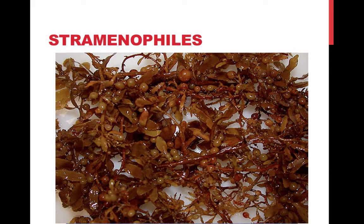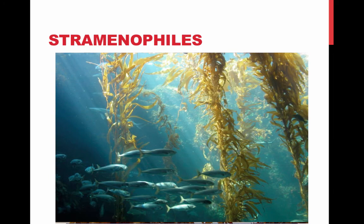Brown algae is the largest and most complex algae. They are all multicellular, and they are the common seaweeds. Giant seaweeds called kelp live in the deep parts of the ocean. The algal body is plant-like but lacks true roots, stems, and leaves, and instead is called a thallus. The root part is the holdfast — it does not absorb nutrients but just anchors the plant. The stem-like part is the stipe, which in turn supports the leaf-like blades.